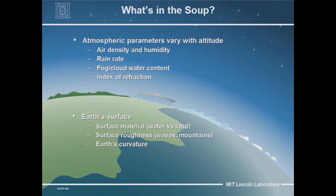Now what is in this soup? The atmospheric parameters may vary with altitude. If you've ever flown on an airplane, it can be 60 or 70 degrees at sea level, and if you go on a transatlantic jet they tell you the temperature outside and it says minus 40 or minus 50 degrees. Temperature gets less as you go higher.